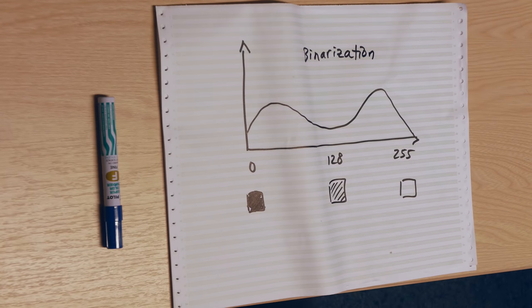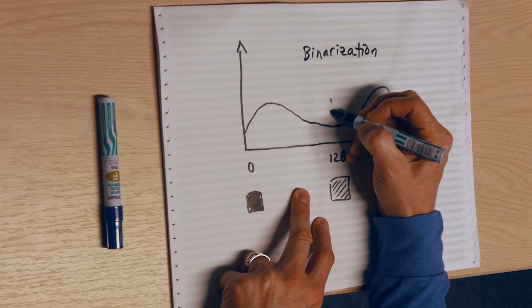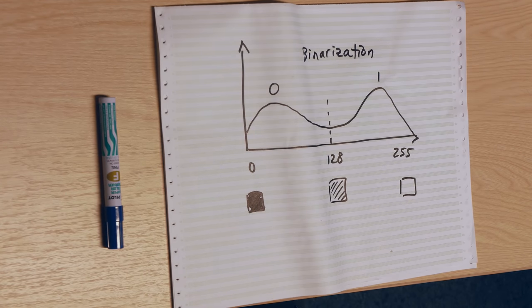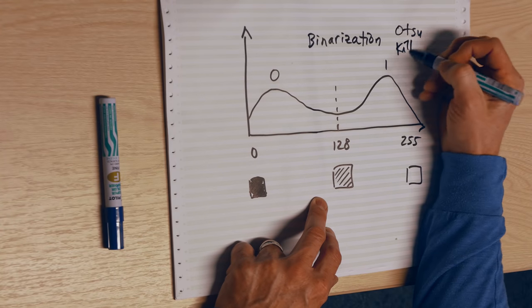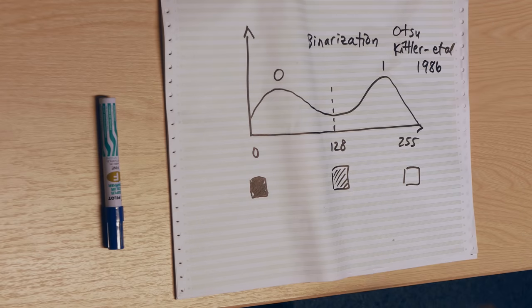Binarization means that I'm going to turn this from a rich panoply of values from 0 to 255 to just a 0 and a 1. You can probably see from this graph—this will be my new 1, this will be my new 0. There's a number of methods that actually do binarization, the most famous of which are probably the Otsu and then the Kittler et al. method. I think that's from 1986, Otsu might be from the same time frame.